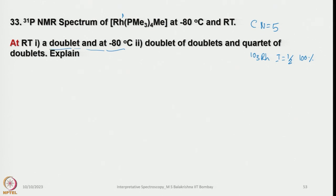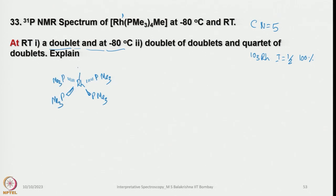The doublet at room temperature suggests all 4 trimethylphosphines are equally coupled to rhodium, resulting in one signal that looks like a doublet. This means all 4 trimethylphosphines are identical. The correct structure is square pyramidal, with all 4 phosphines in the basal plane and the methyl group at the apex. They couple with rhodium to show a doublet.